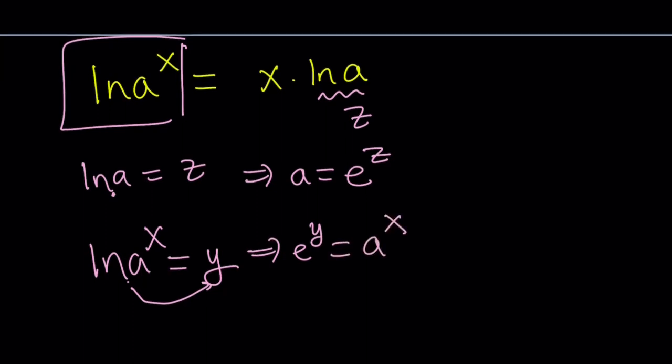Now, we have two equations. The first one is a equals e to the z. The second one is e to the y equals a to the x. That kind of looks complicated, but don't worry about it. Here's what we need to do. We are trying to find an expression for y. So, let's go ahead and use the first one here. Let's replace a with e to the power z.